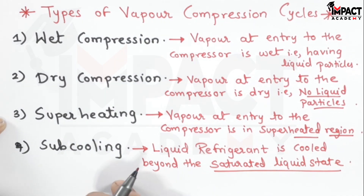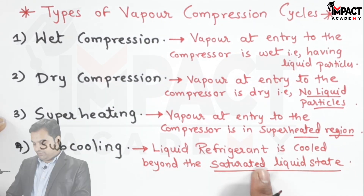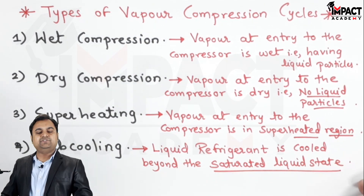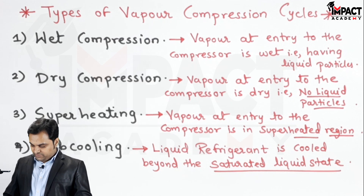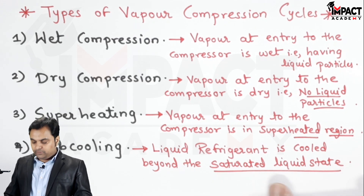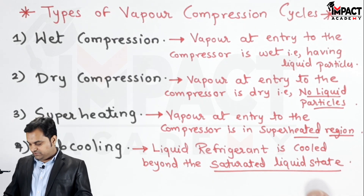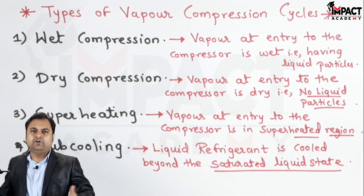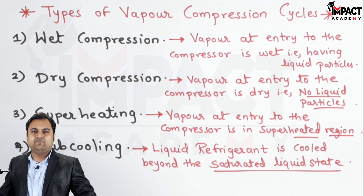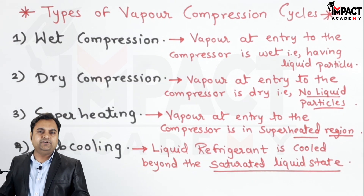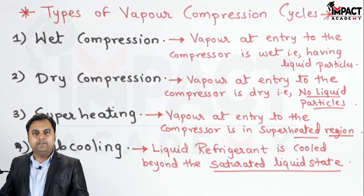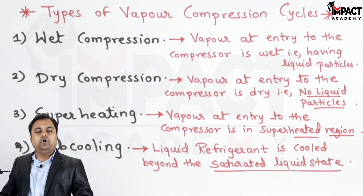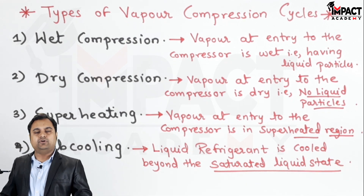In sub cooling, the liquid refrigerant coming out from the condenser is cooled beyond the saturated liquid state — that is, it goes further away from the saturated liquid state.